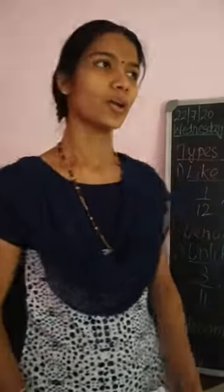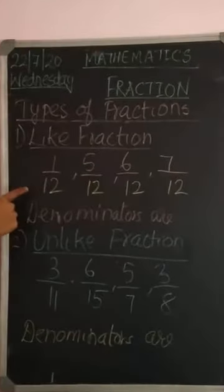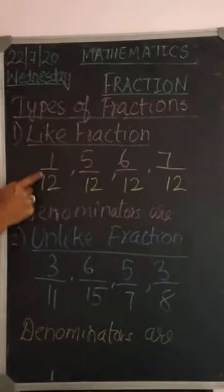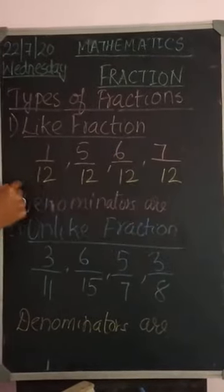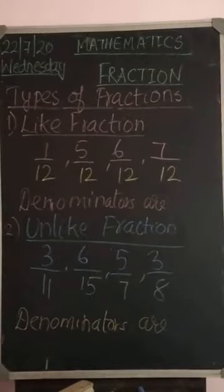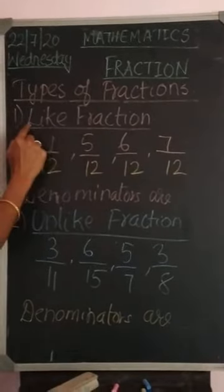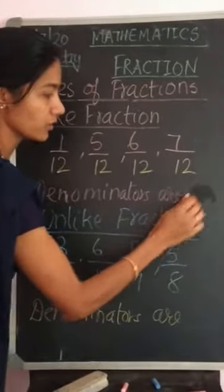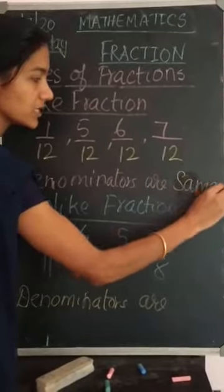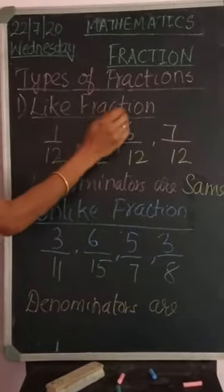Now we will learn the types of fractions. The first one is like fractions. Can you observe these fractions: 1 by 12, 5 by 12, 6 by 12, and 7 by 12? What do you observe? The denominators are the same. So like fractions means fractions with the same denominator are called like fractions.